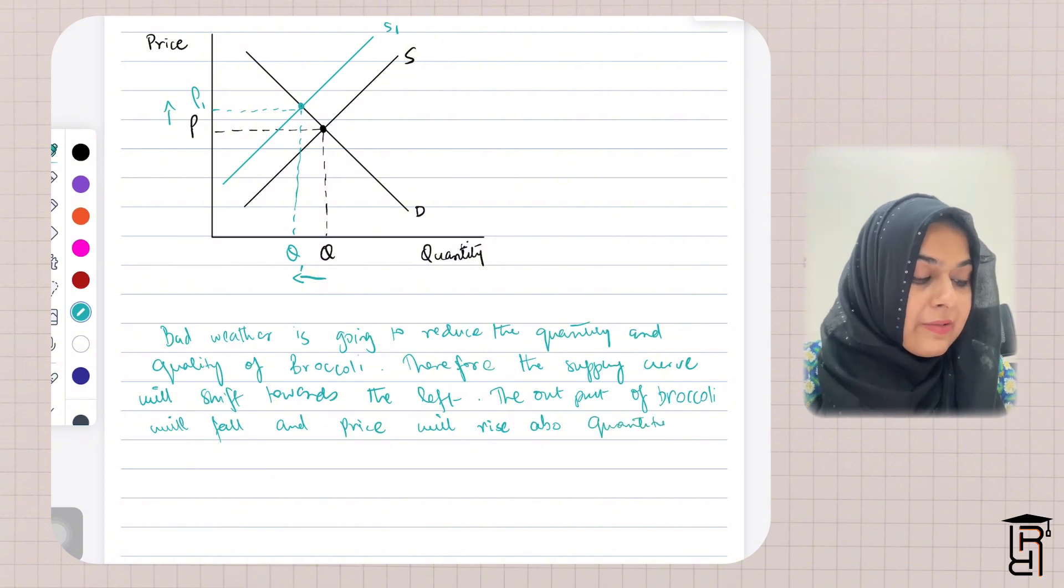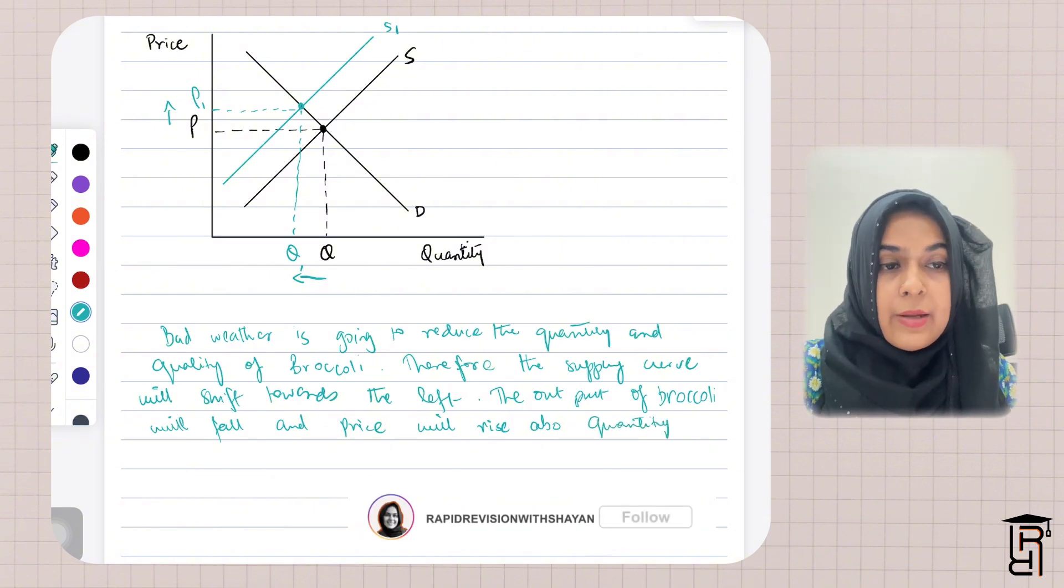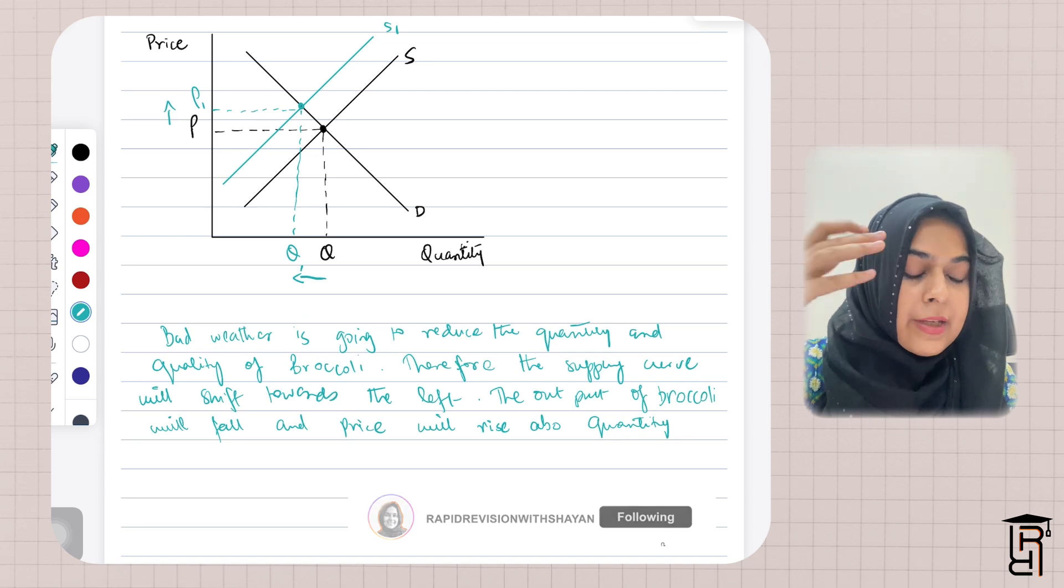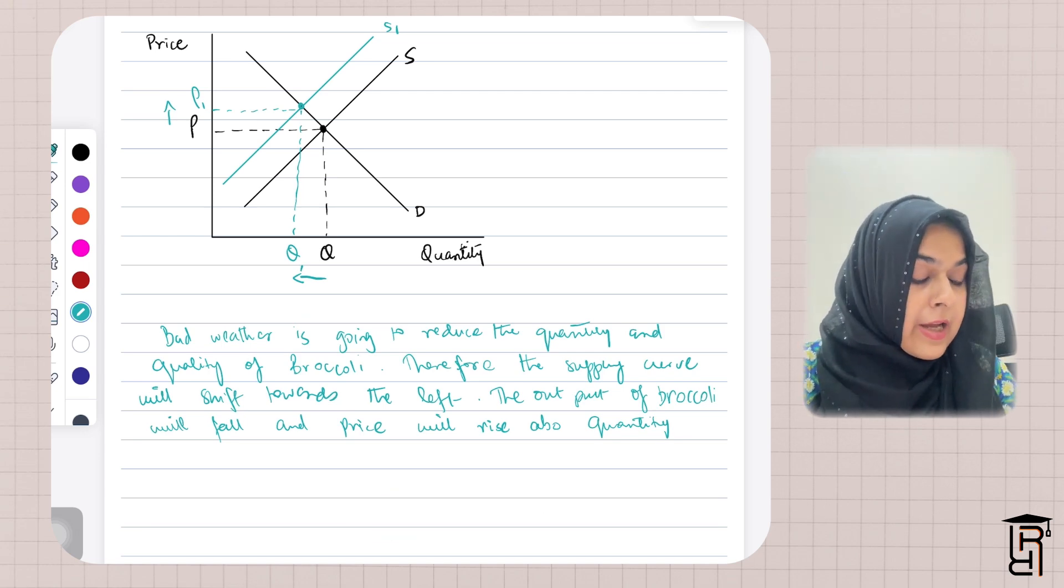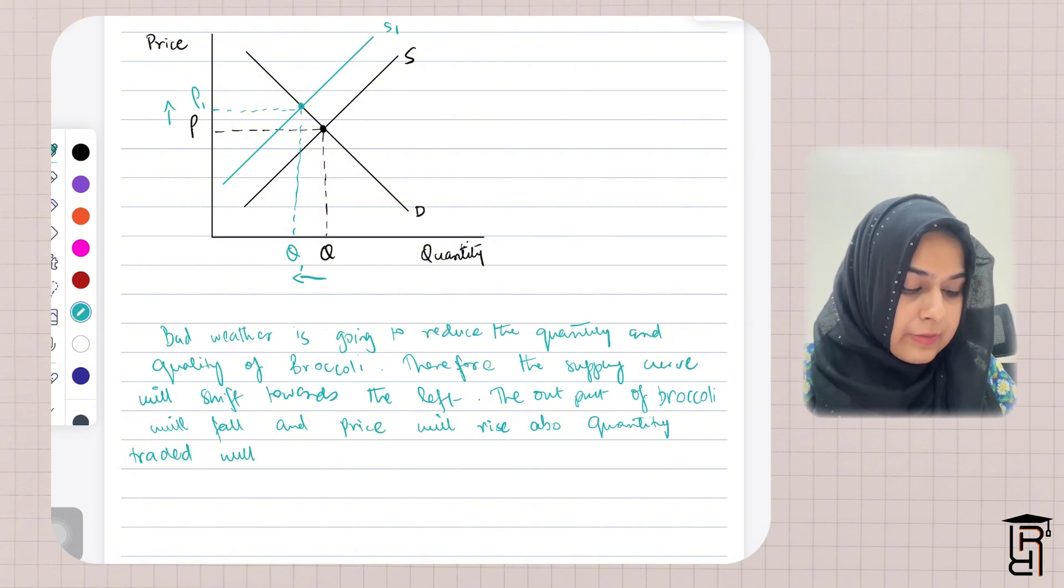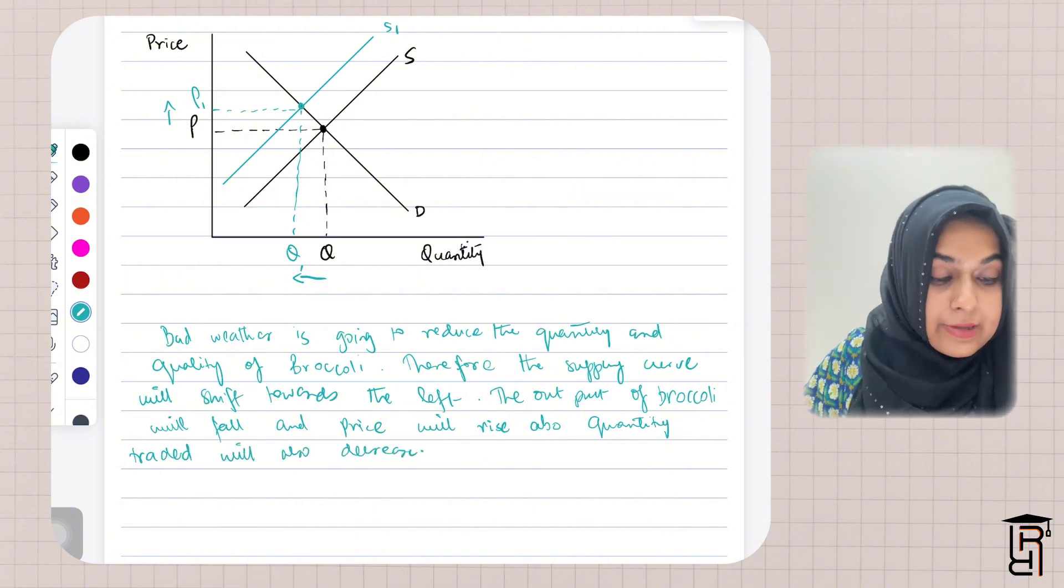Also, quantity traded will decrease. Expensive broccoli will not be purchased by many consumers, so there will be a contraction in the demand curve and quantity traded will also decrease.